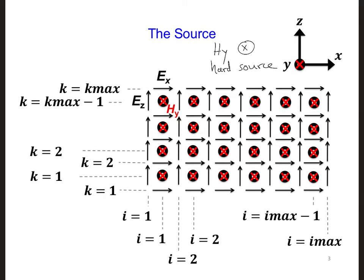Now where should we put this source? Well, since the edges of the grid are PEC, we should put the source in the middle of the grid at Imax divided by 2 and Kmax divided by 2, so that we can see some propagation away from this source before it reaches the edges of the grid.